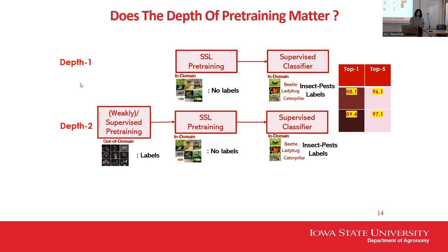The difference between depth one and depth two is two levels of pre-training in depth two. With depth one, top-one accuracy is 88.1% and top-five is 96%. With depth two, accuracy increases to 89.4% and 97.1%. While it may seem like just 1%, that is a huge increase in accuracy for a classification problem with 2,500 species and 6 to 30 million images.